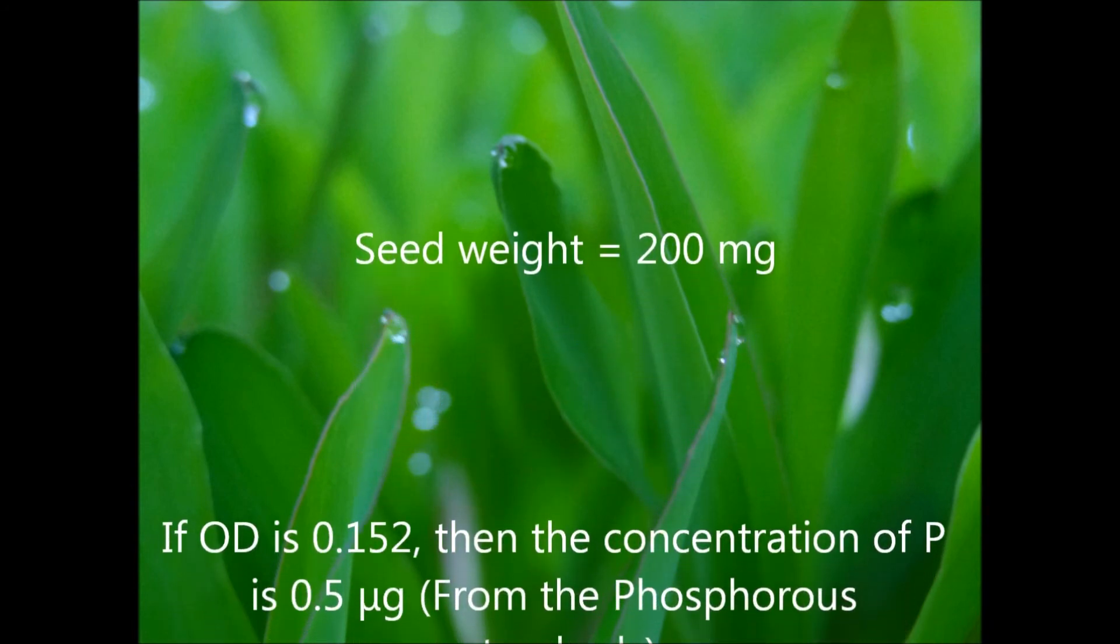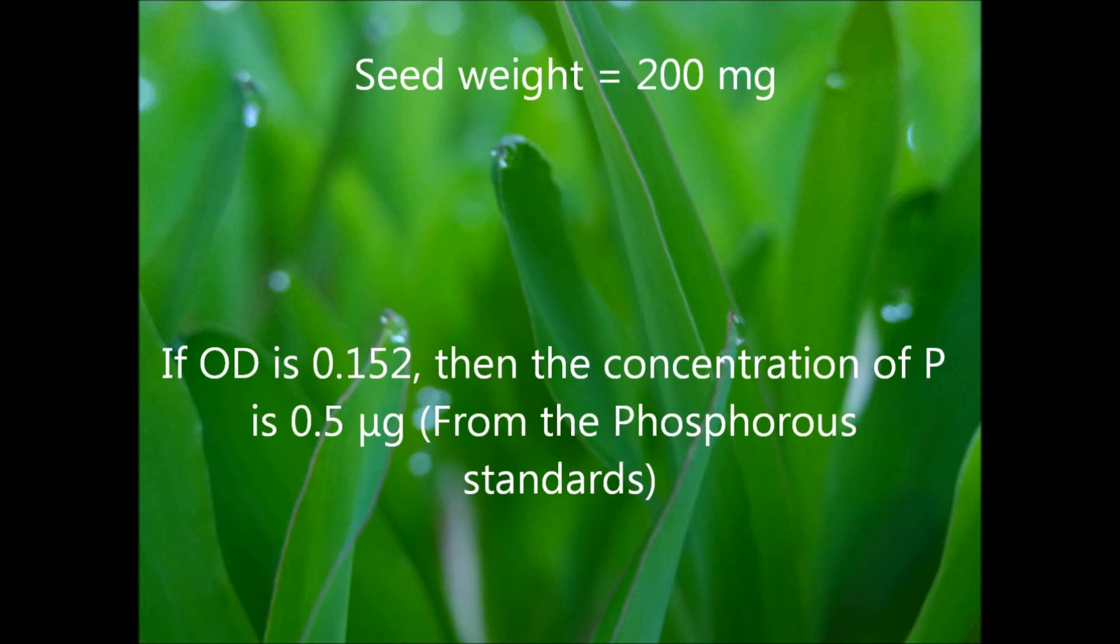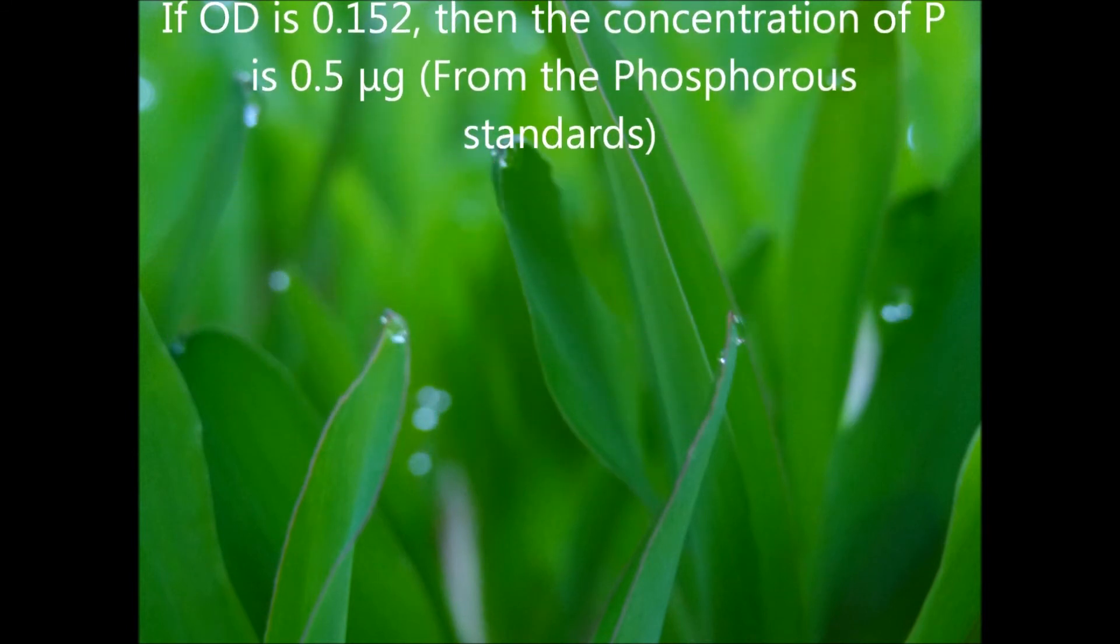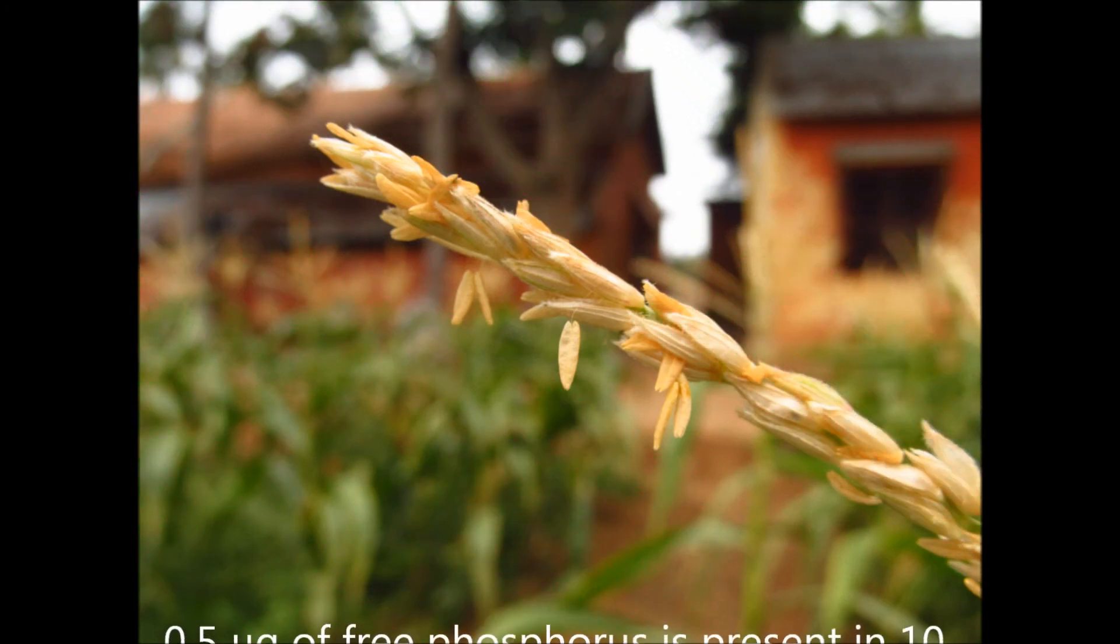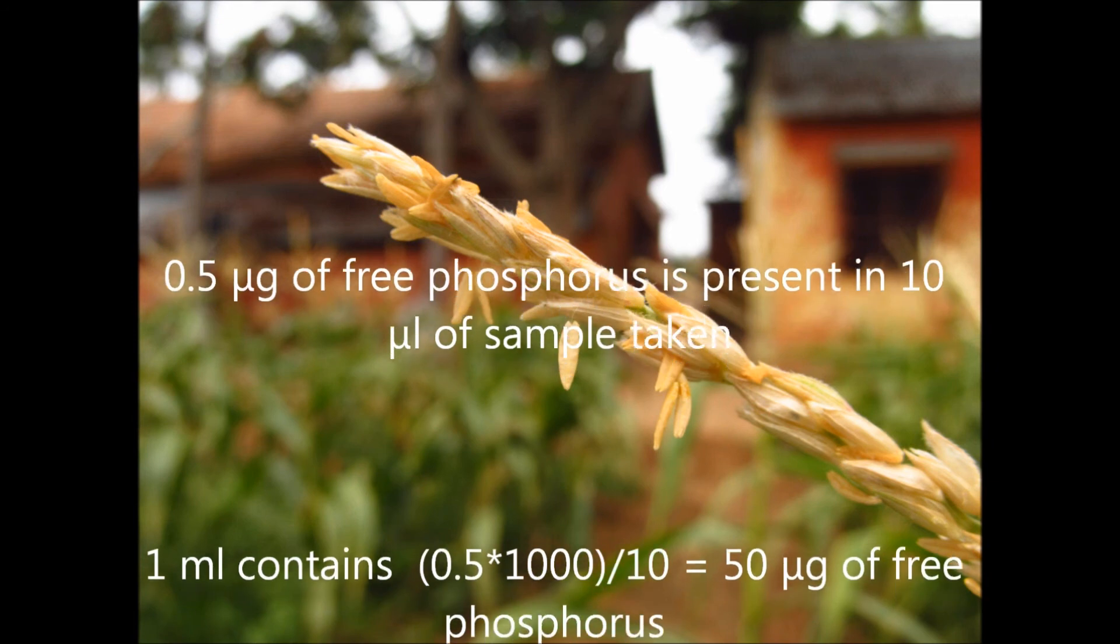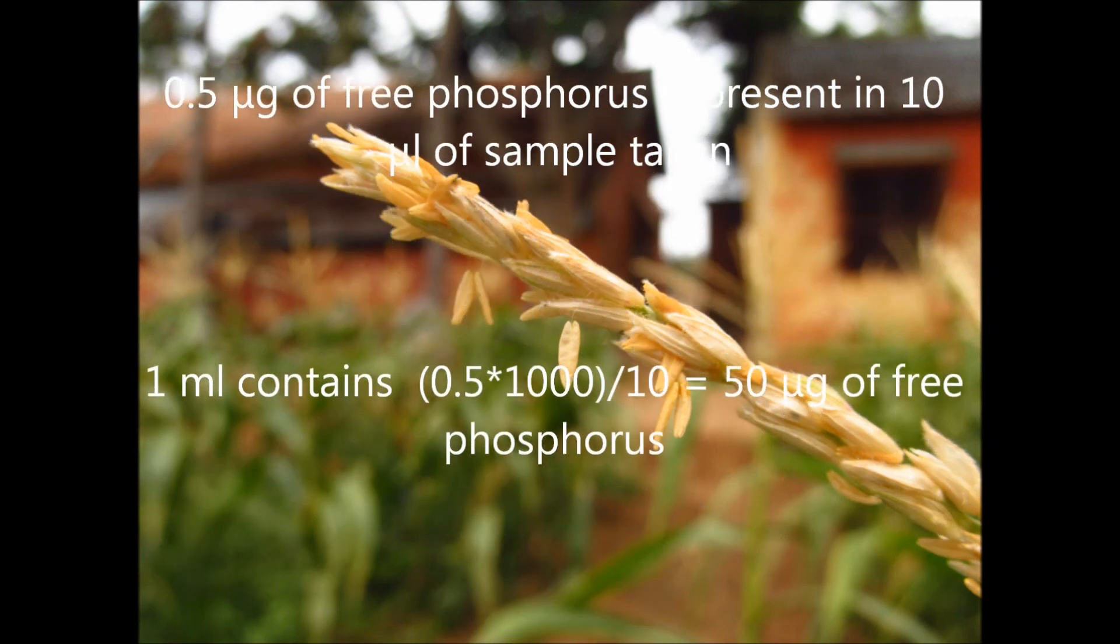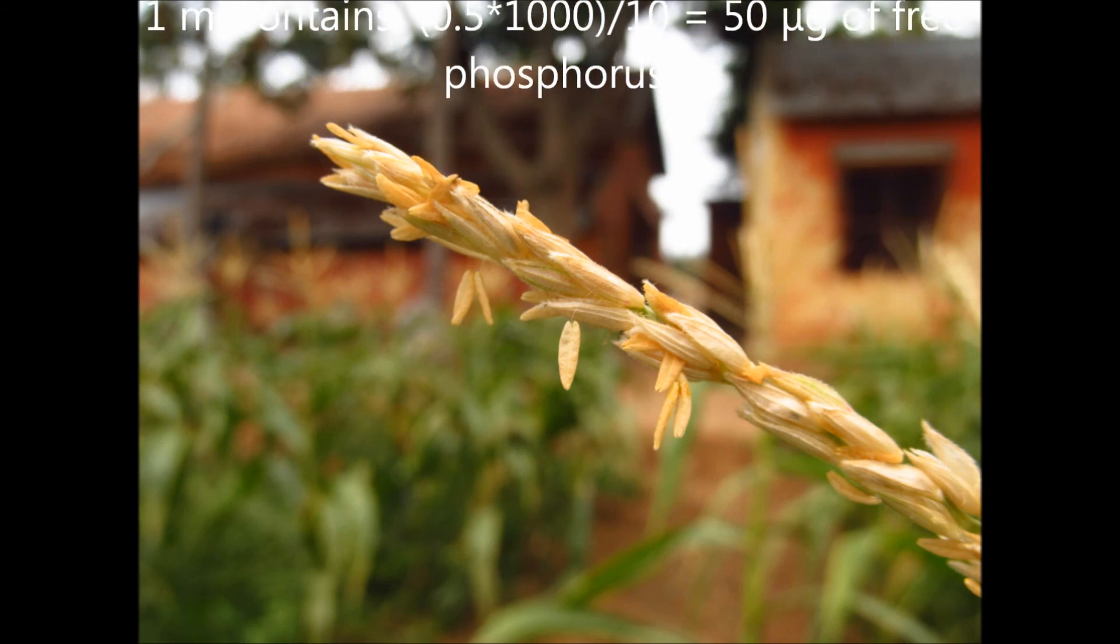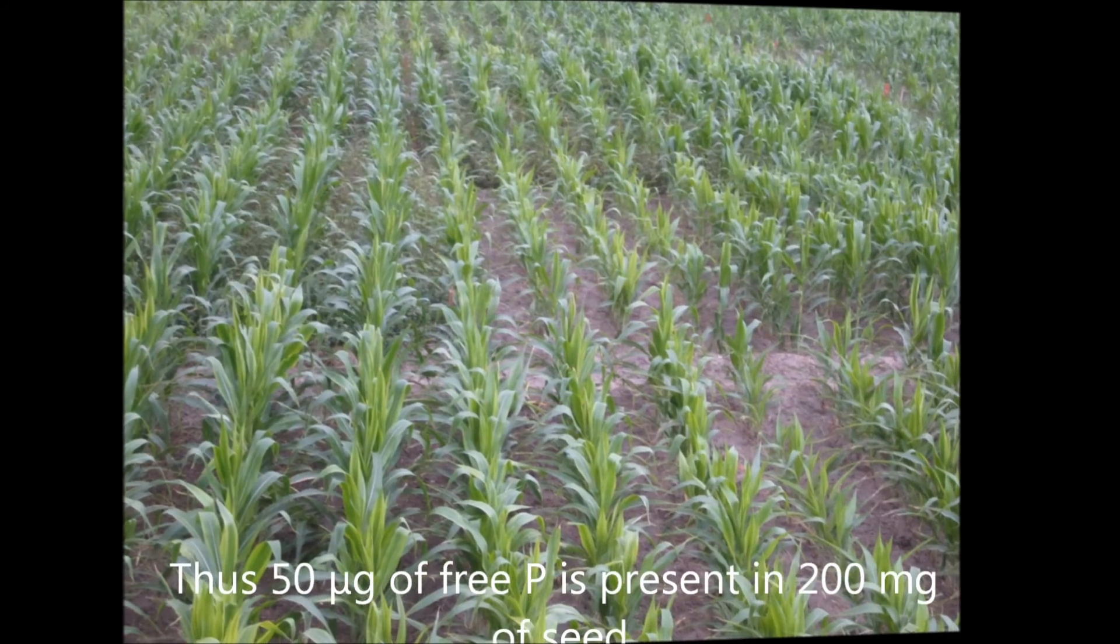Initially, 200 mg of seed was taken. If OD is 0.152, then the concentration of phosphorus is 0.5 micrograms from the phosphorus standard. 0.5 micrograms of free phosphorus is present in 10 microliters of the sample taken. Therefore, 1 ml of sample contains 50 micrograms of free phosphorus.